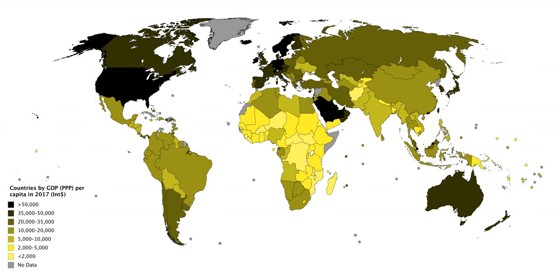Three lists of countries below calculate gross domestic product at purchasing power parity per capita, i.e., the purchasing power parity value of all final goods and services produced within a country in a given year, divided by the average population for the same year. As of 2017, the average GDP per capita of all of the countries of the world is USD $17,300.